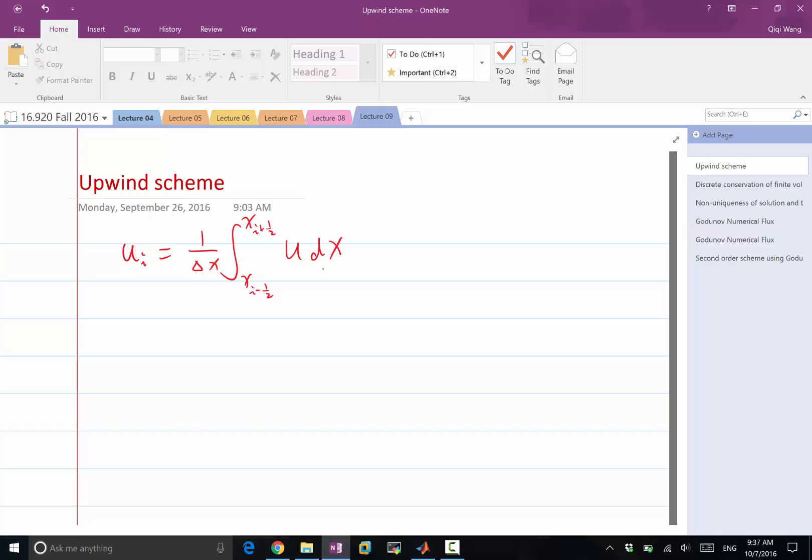The grid points lie in between the cell averages, so they are second class citizens and we use the half indices, i plus half and i minus half, to denote them. This is our definition of ui bar. In the future, I will just use ui to denote them because whenever I see ui, it's actually the cell average.